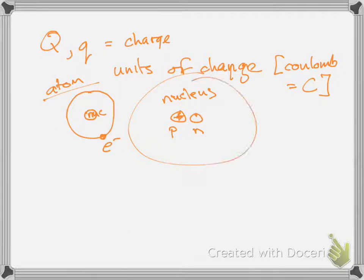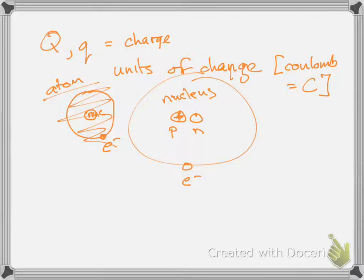In the nucleus you have protons and neutrons, and electrons go around the nucleus. In a neutral atom, we have the same number of protons and electrons. With one proton, one neutron, and one electron, this is a hydrogen atom. Add a second proton, neutron, and electron and that's helium. Add a third and it's a neutral lithium atom, and so on.